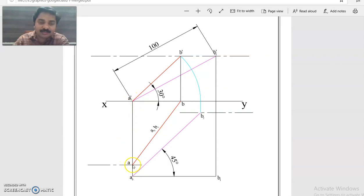So this is A. AB is the top view, A dash B dash is the front view. So this is the solution of the problem.